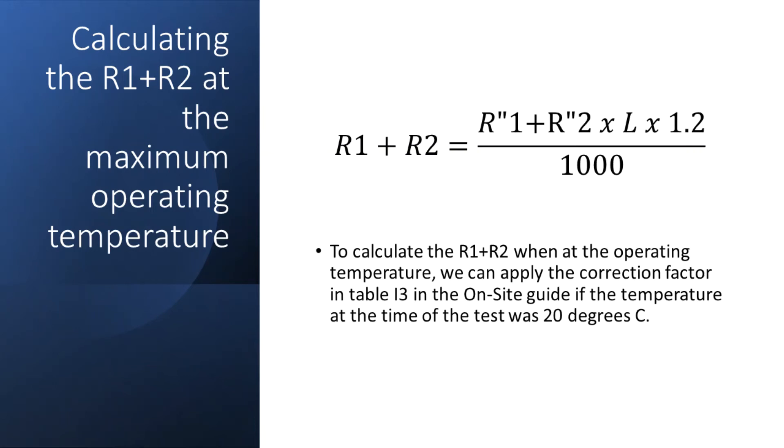So for the same reason that we subtract 20 percent from the maximum permitted ZS, when calculating R1 plus R2 we can use the correction factor to add that 20 percent to allow for the increase in the temperature of the circuit when it's under load.